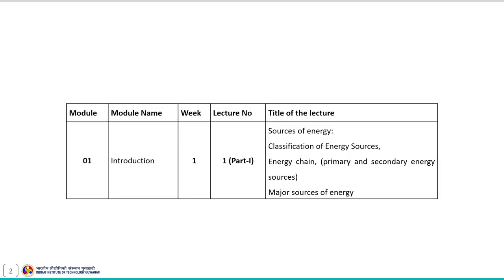We will discuss about the classification of energy sources, followed by energy chain, and at the end we will discuss about the major sources of energy. Since the advent of industrialization, coal has been the most common source of energy. However, in the last few decades globally there is a switch over from coal to oil as a major source of energy because it is simpler and cleaner to obtain useful energy from oil. But there is a growing concern on utilization of these resources for sustainable fuel and chemical production because oil production has been constantly decreasing.